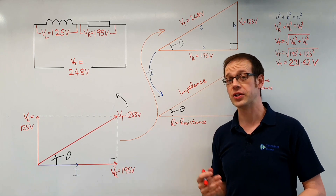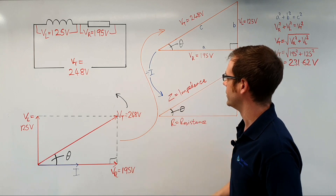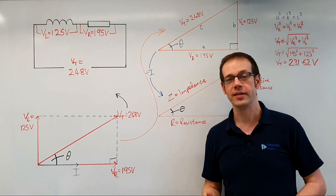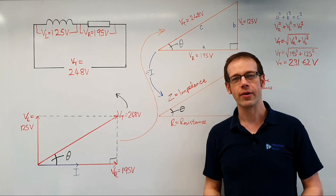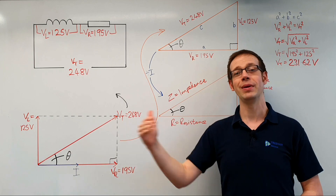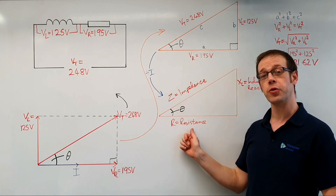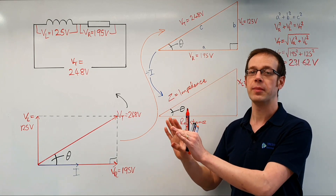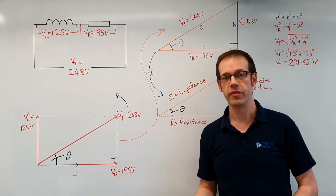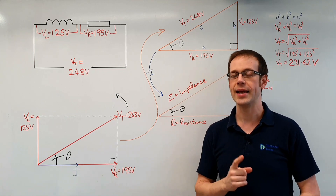We use a capital Z to represent impedance — Z is equal to impedance. Breaking the word down: impedance is something that tries to impede something else — to hold it back, stop it from making progress. This is very similar to the word 'resist.' Impedance means another type of opposition to current flow, specifically the total opposition to current flow in an AC circuit.